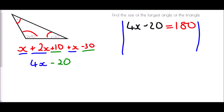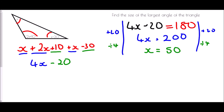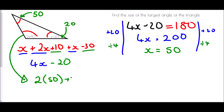Adding 20 to both sides: 4x = 200. Dividing by 4: x = 50. The angle x = 50°. The angle x − 30 = 50 − 30 = 20°. The angle 2x + 10 = 2 × 50 + 10 = 100 + 10 = 110°. The question asked for the largest angle, which is 110°.